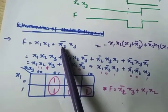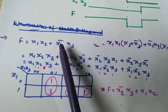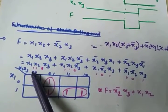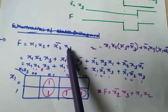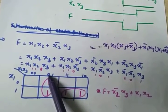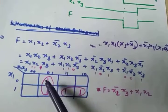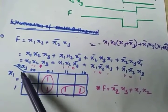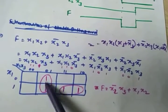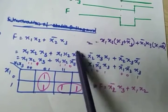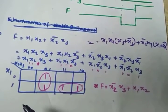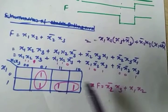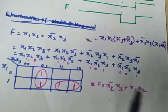So x2_bar means first term is 0. x3 is 1, so 0-1 gives the column. Since x1 is missing, you put both 1 and 0 — meaning both rows are 1 in that column. So by mapping you will get this equation. This is the method.